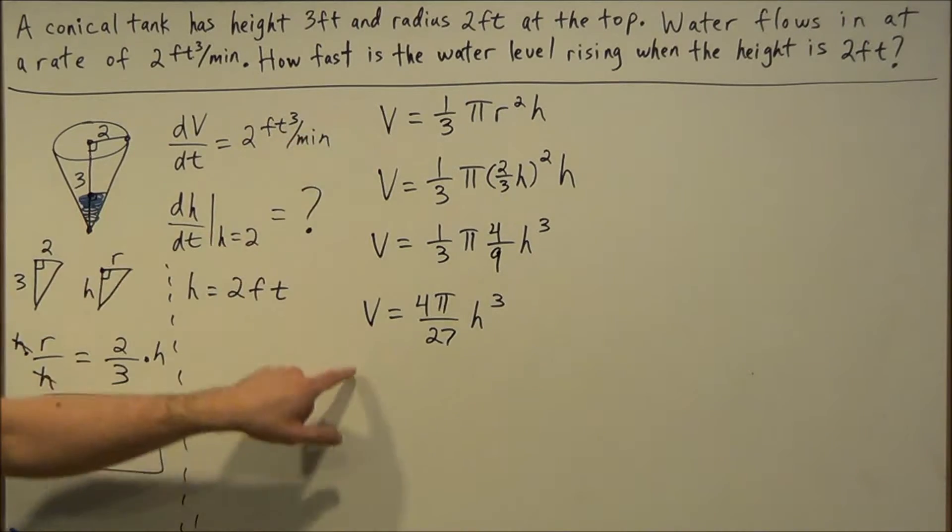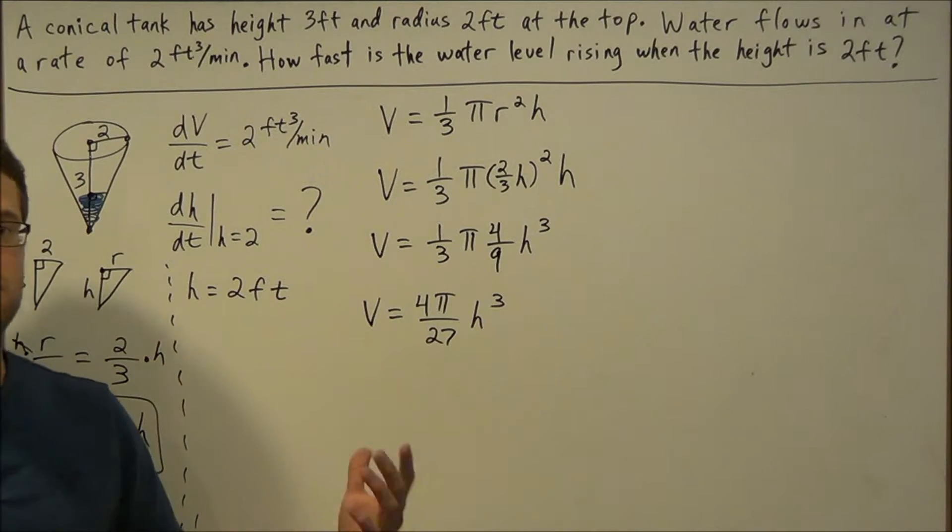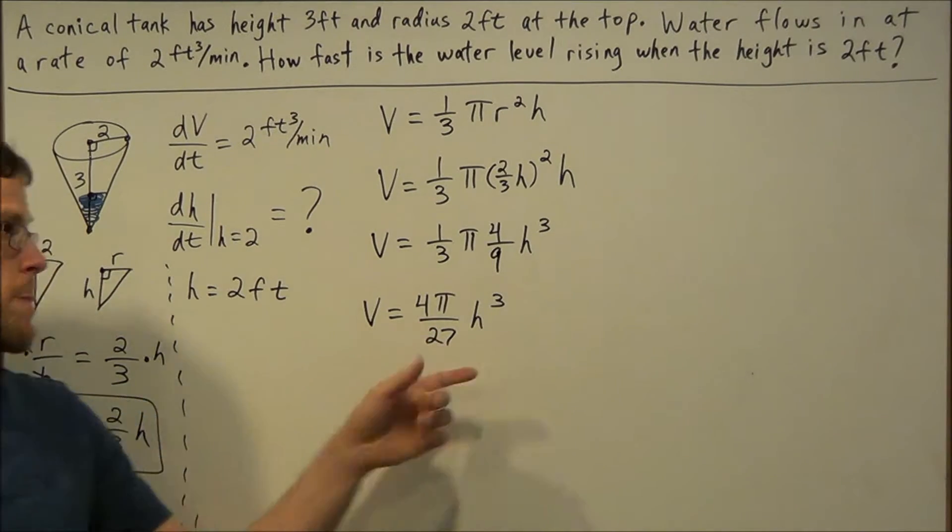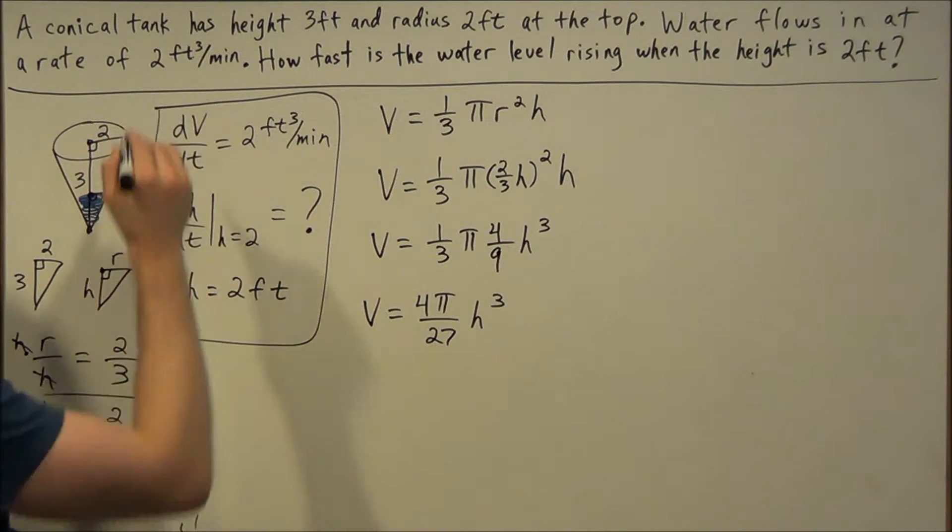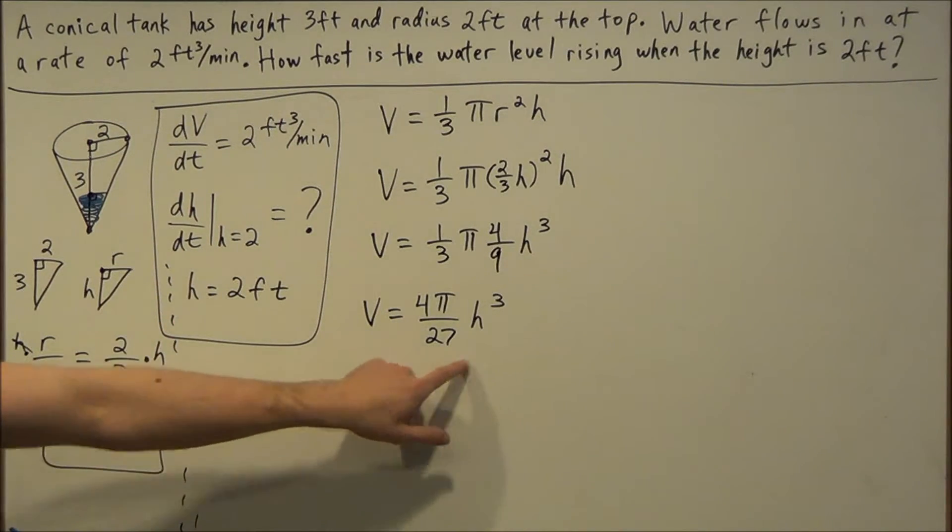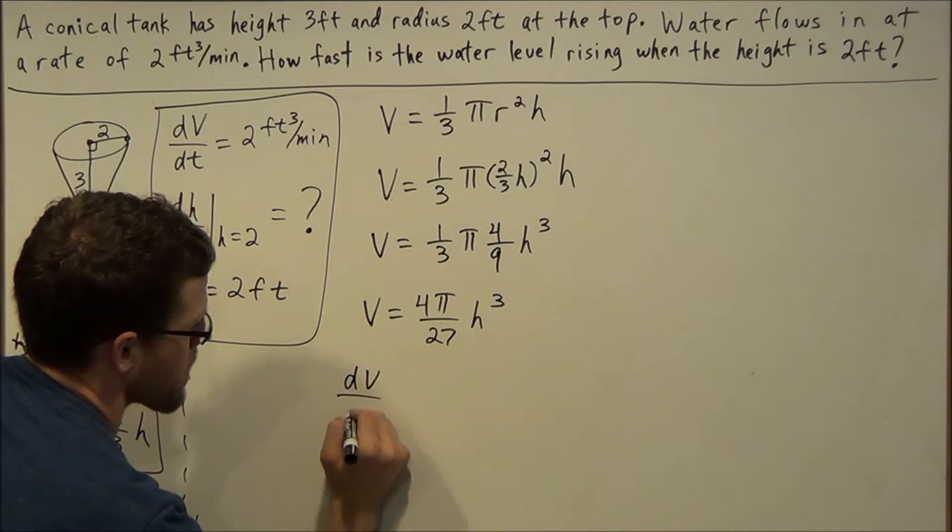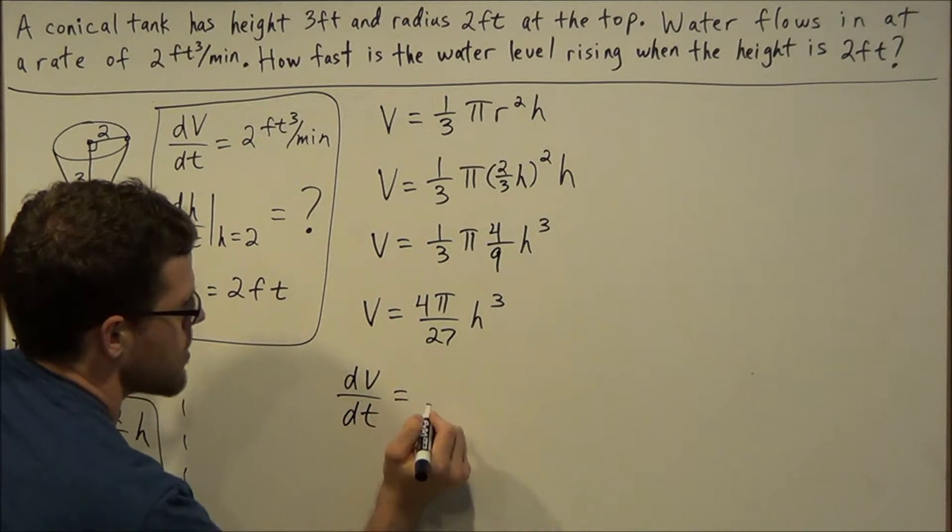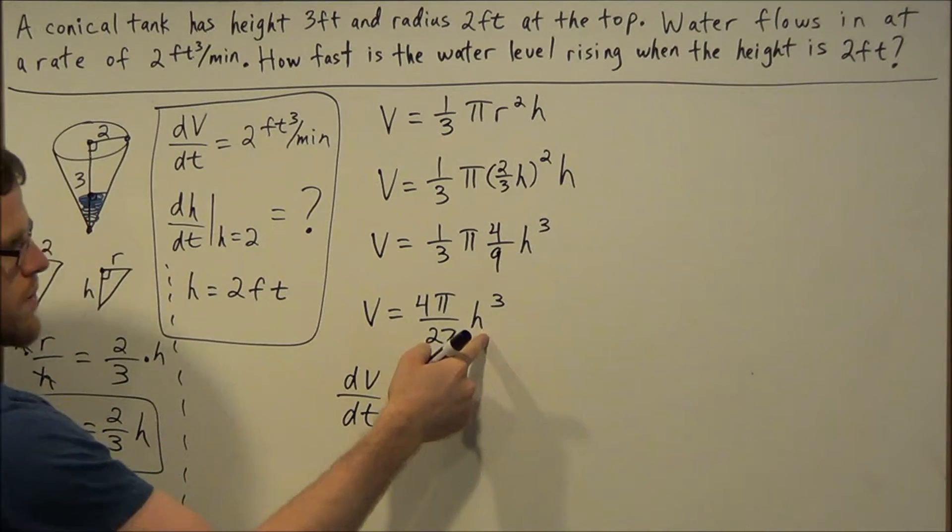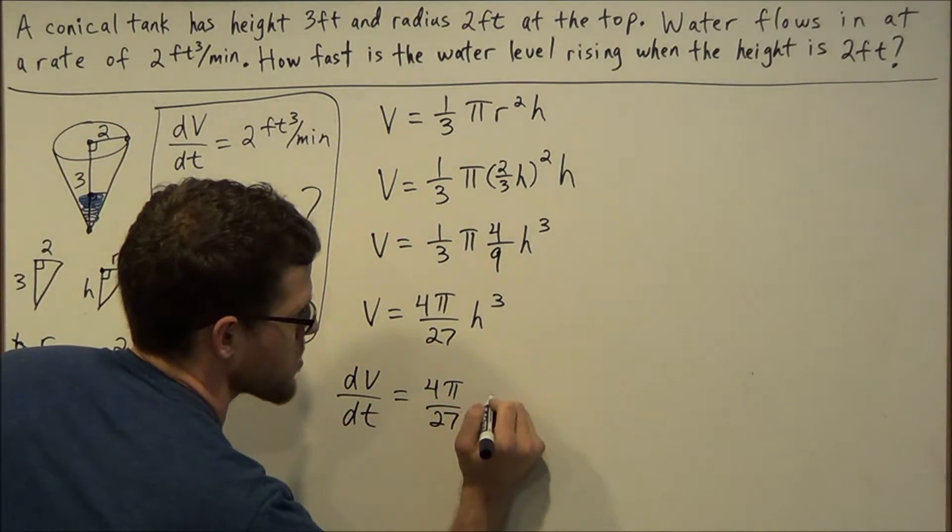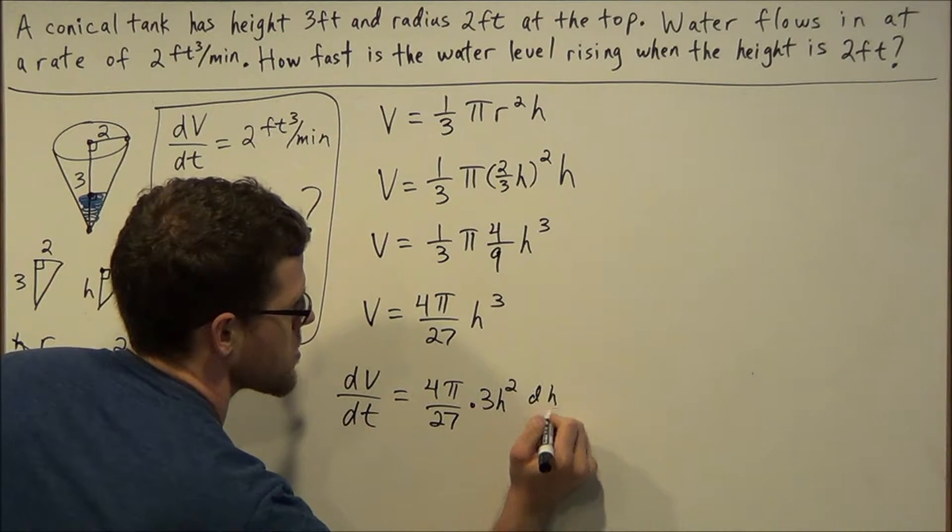From this line to this line, we've solved our problem that now we have less variables. When we take a derivative with respect to time, we'll have enough data to solve for the unknown rate dh/dt. So we take the derivative of both sides with respect to time. On the left, we're going to have dV/dt equals (4π/27) is a constant, so we leave it be, and we take the derivative of h³ with respect to time. We'll get 3h² dh/dt.